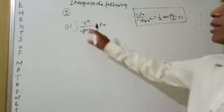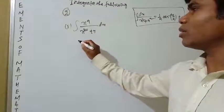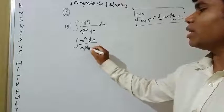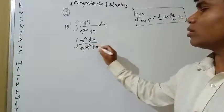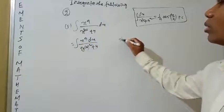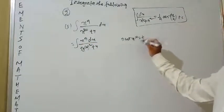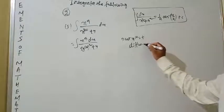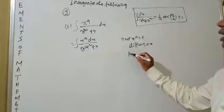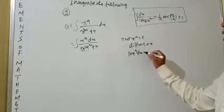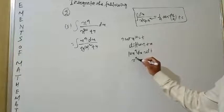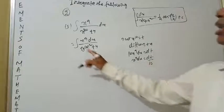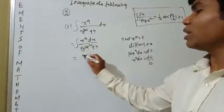The next question is: integration of x⁹ dx divided by x²⁰ + 4. Rewrite as ∫x⁹ dx / [(x¹⁰)² + 4]. Put x¹⁰ = t. Differentiating with respect to x: 10x⁹ dx = dt, so x⁹ dx = dt/10.